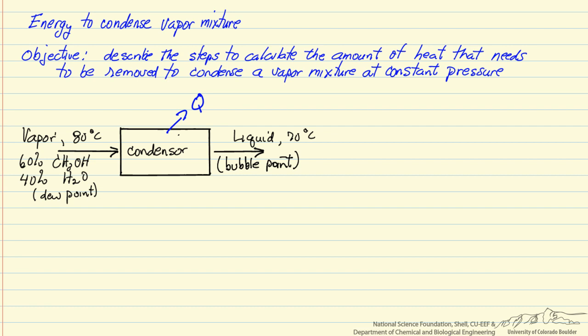I have shown a diagram of the type of calculation we would like to do where we have a vapor coming in. In this case it is at its dew point. We want to have a liquid leaving at its bubble point, and what we are going to use is the idea of state function to do this calculation. The overall calculation is just delta H is equal to Q.